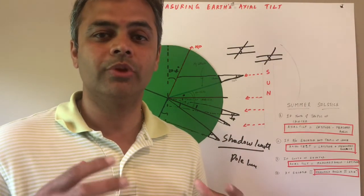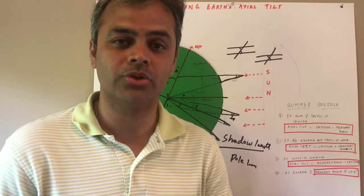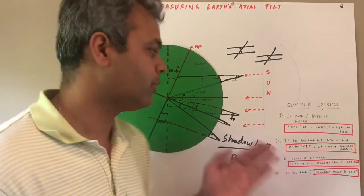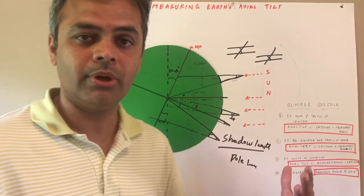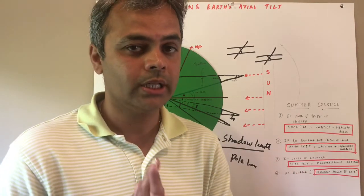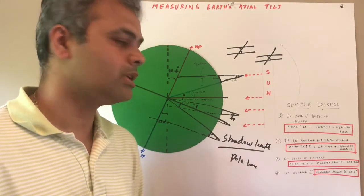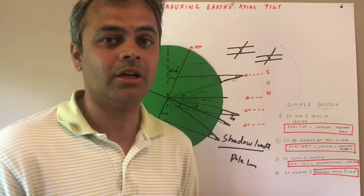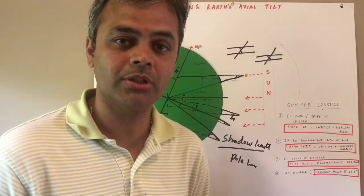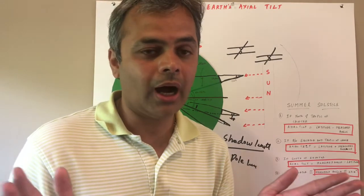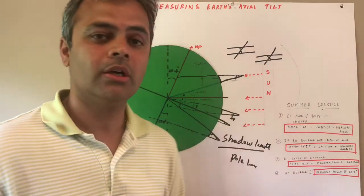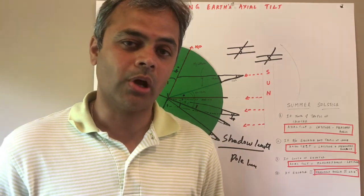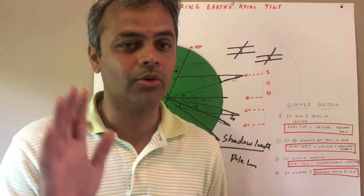I hope you all learned a little about how to calculate the axial tilt with some very basic trigonometry and geometry. To summarize: if you're north of the Tropic of Cancer, axial tilt = latitude − measured angle; if you're between the Tropic of Cancer and the equator, axial tilt = measured angle + latitude; if you're south of the equator, axial tilt = measured angle − latitude; and if you're on the equator, the measured angle should be very close to 23.4°. I thoroughly enjoyed doing this experiment, and a big thank you to my friends Vismay and Arun. I hope you all learned something and had fun — thank you, take care, bye!